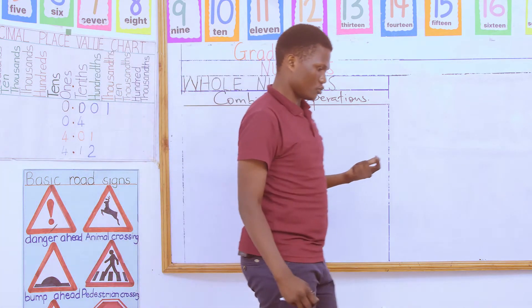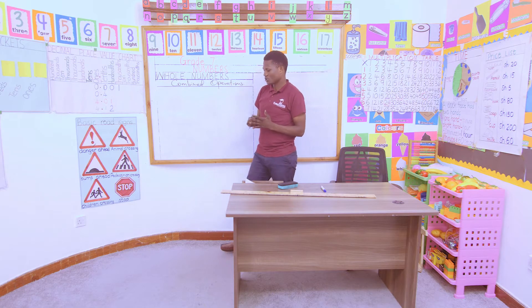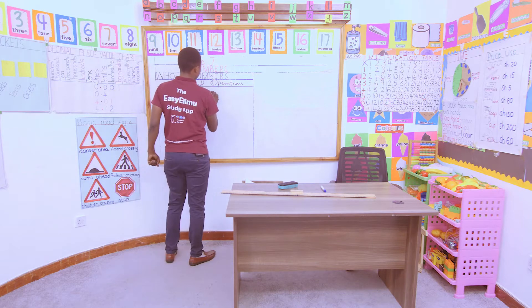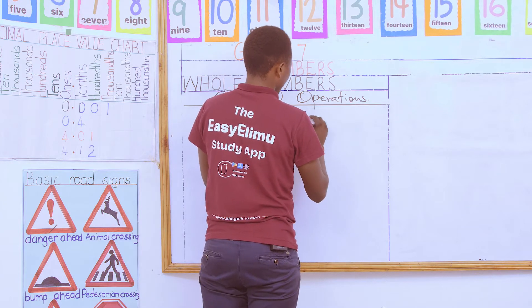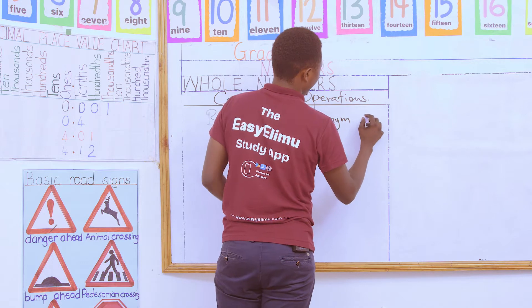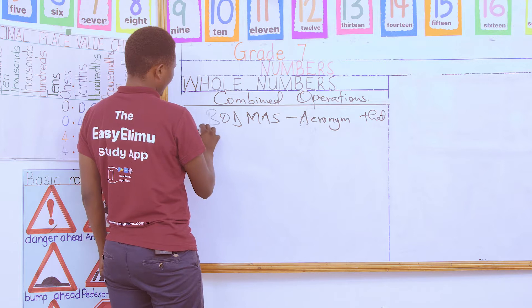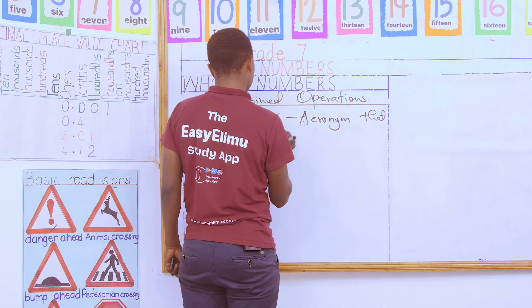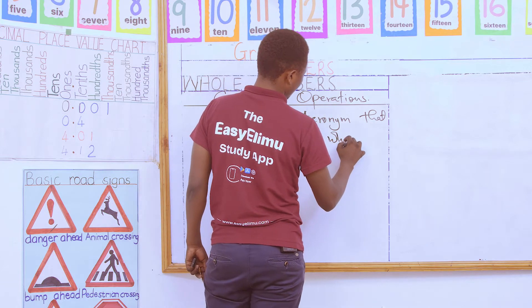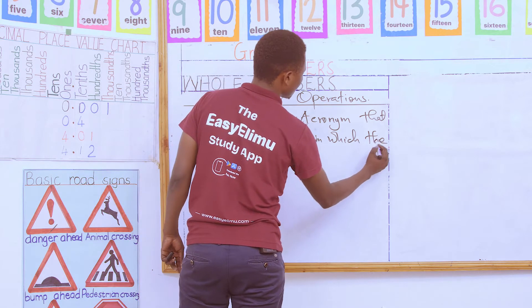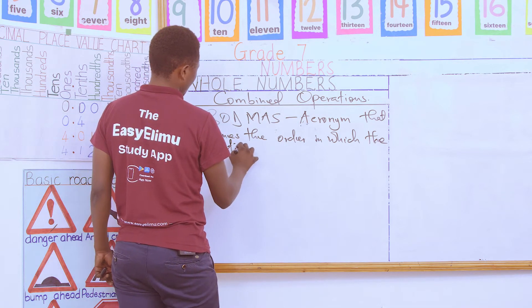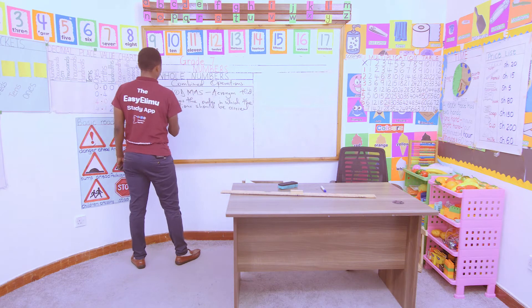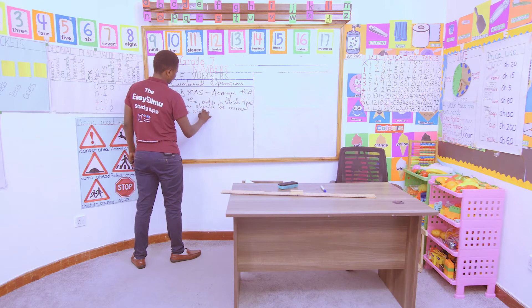Before you are able to answer or solve any problem involving combined operations, you need to appreciate what we call BODMAS. BODMAS is simply an acronym that defines the order in which the operations should be carried out in a single question or problem.